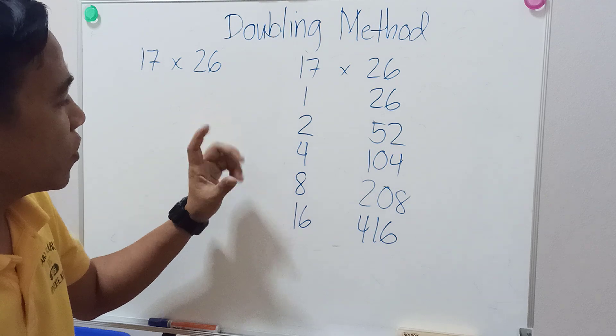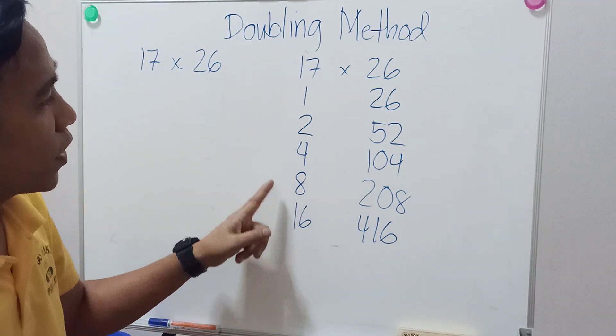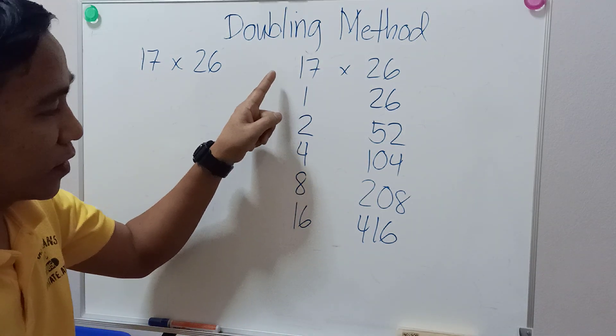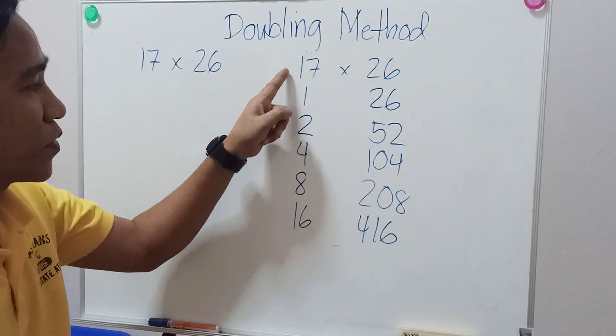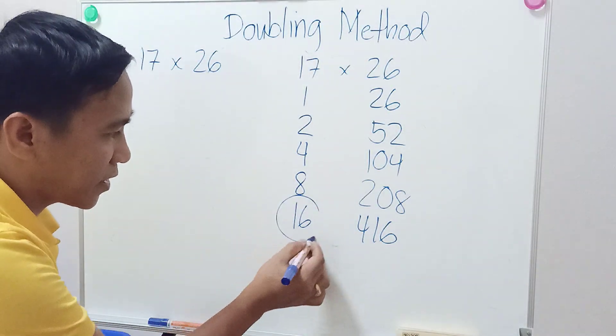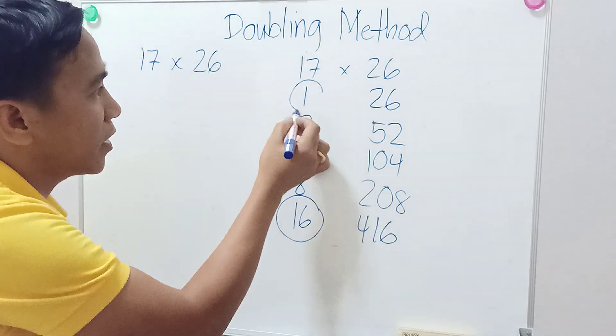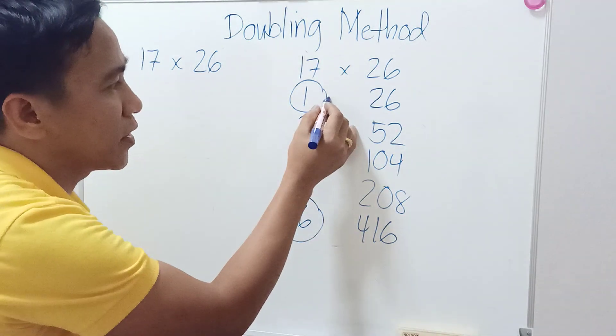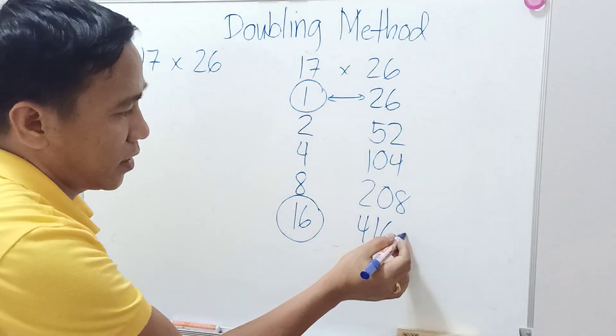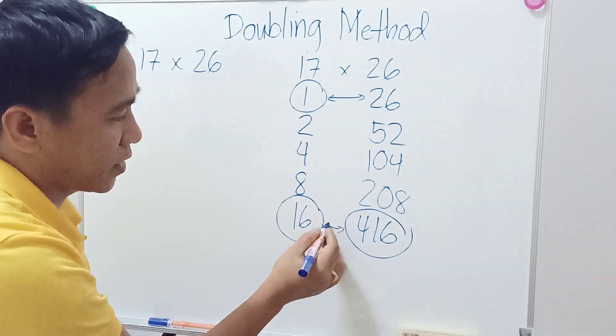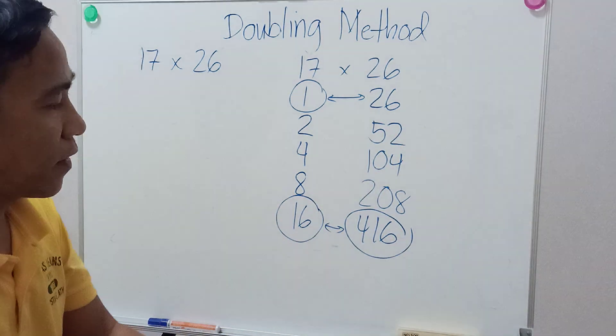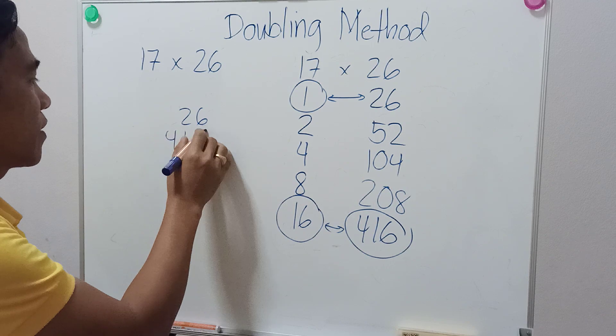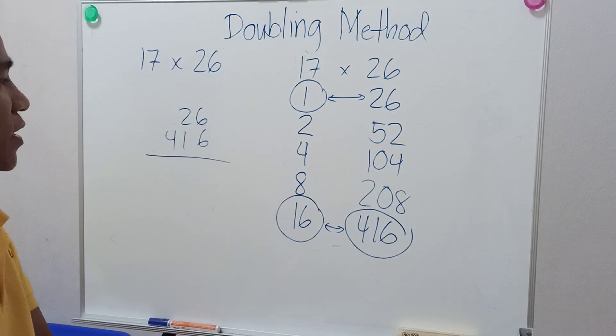The next step is you have to find the numbers when you add them from the left hand side that equal 17. So find the numbers here that add up to 17, and that is 16 and 1. After that, on the right hand side, look for the corresponding numbers, so 416 and 26. Then you add them, so 416 plus 26 is 442.